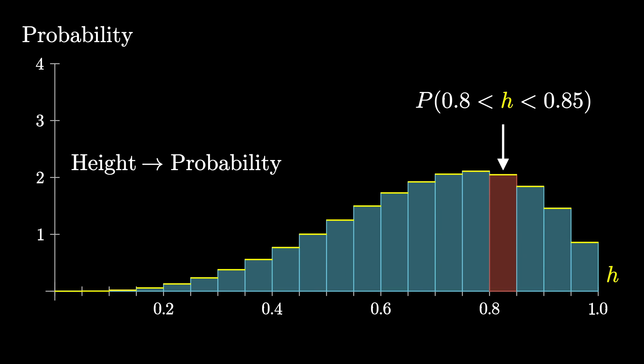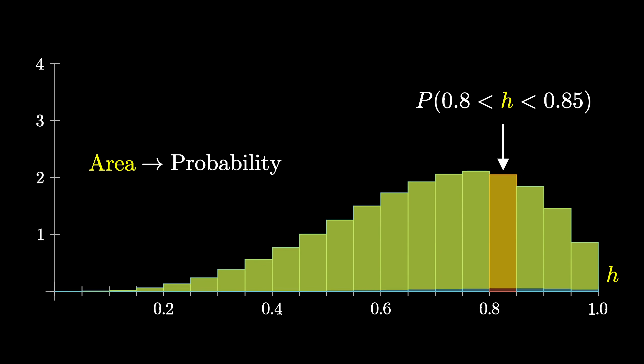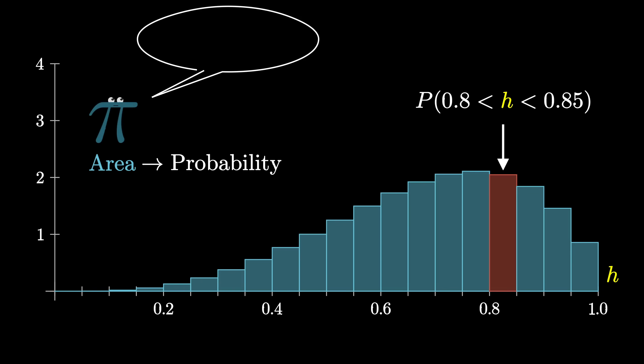Also, and this is more important than it might seem, rather than thinking of the height of each of these bars as representing the probability, think of the area of each one as representing that probability. Where exactly those areas come from is something that we'll answer later. For right now, just know that, in principle, there's some answer to the probability of H sitting inside one of these ranges.